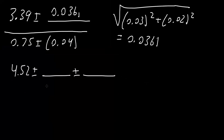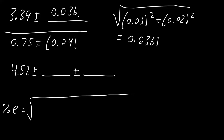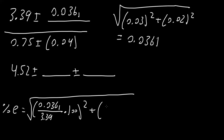Since we're dealing with division, like multiplication, what we need to do is calculate the percent relative uncertainty. The percent relative uncertainty equals the square root of: we take (0.0361 divided by 3.39) times 100, and we square this number, plus (0.04 divided by 0.75) times 100, and then we square it.